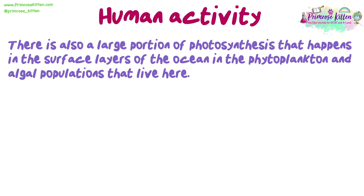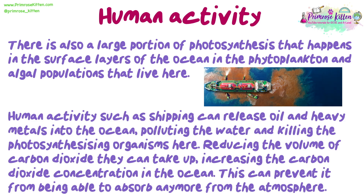There is also a large portion of photosynthesis that happens in the surface layers of the ocean in the phytoplankton and algal populations that live there. Human activity such as shipping can release oil and heavy metals into the ocean, polluting the water and killing the photosynthesizing organisms, reducing the volume of carbon dioxide they can take up and increasing the carbon dioxide concentration in the ocean. This can prevent it from being able to absorb any more from the atmosphere.